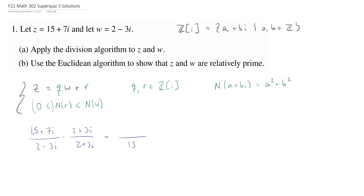In the numerator, we're going to get 15 times 2 is 30, then minus 7 times 3, so that's 21. Then 15 times 3 is 45, and 7 times 2 is 14 copies of i. So all I'm doing is distributing. If I do my arithmetic correctly, this is going to be 9 over 13 plus 59 over 13 times i.